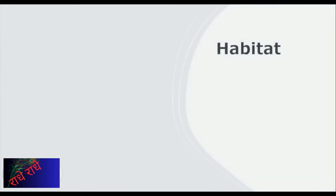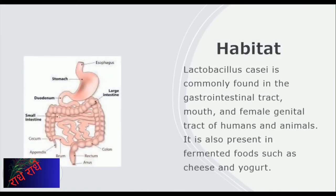Lactobacillus casei is an important microorganism found in many habitats in humans and animals. It has a wide distribution in the gastrointestinal tract, mouth, and female genital tract. It can also be found in many fermented foods such as cheese and yogurt. This microorganism has been found to have probiotic properties, making it an important part of a healthy diet.